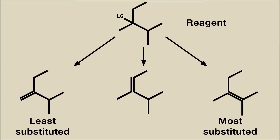Although all possible alkene products are generally present to some degree, the one that has the most substituents around the double bond is the most abundant. This product, the Zaitsev product, takes its name from the rule as well as the chemist.